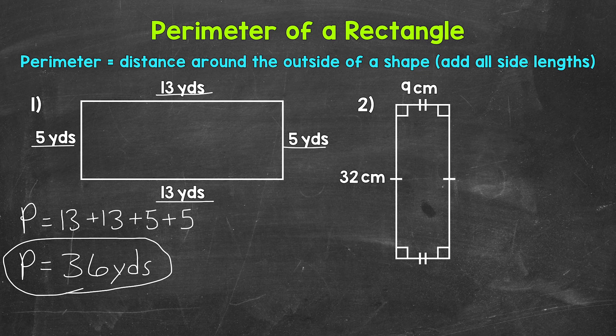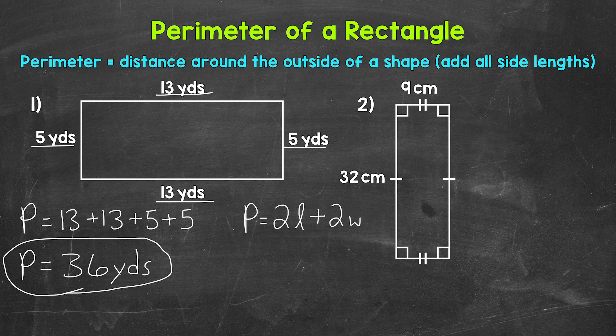Now as far as rectangles go, we can also find the perimeter using a formula. Perimeter equals 2 times the length — I'm going to use a cursive L so it doesn't look like a 1 — plus 2 times the width. So we can use this formula as well. It's essentially the same thing. You can see that we have two 13s and two 5s, so 2 times the length plus 2 times the width.